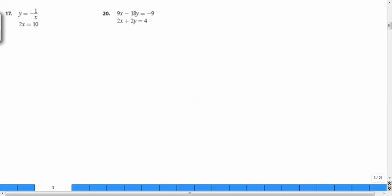Two other systems. 17. y equals negative 1 over x, and 2x equals 10. Well, in the second one, if I divide by 2, I can find my x. x equals 5. Take it into the first equation. We find that your y equals negative 1 over 5. And we're done.